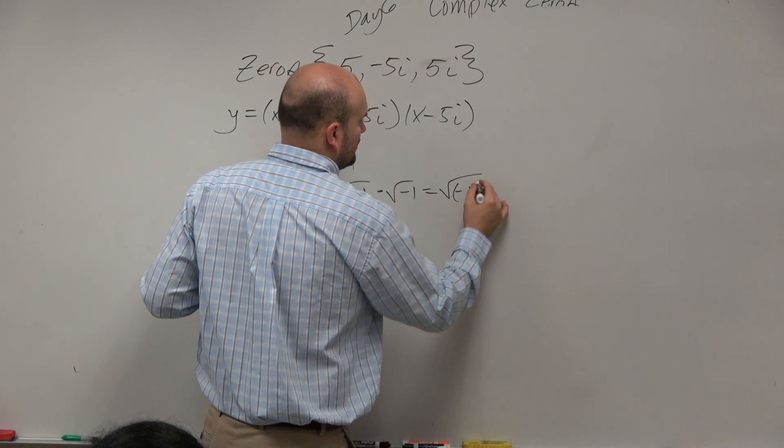Now we just have a binomial times a binomial, right? You can use FOIL, distributive property, whatever your heart desires. And then boom, there you go.